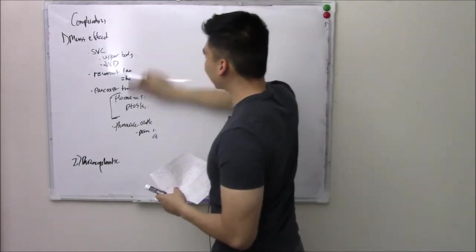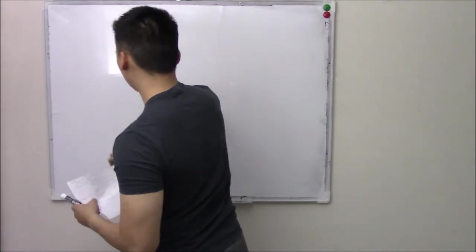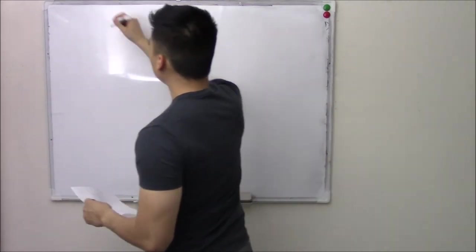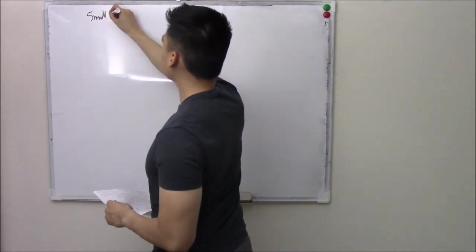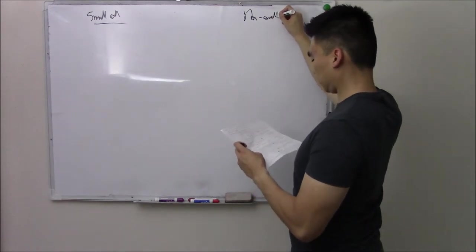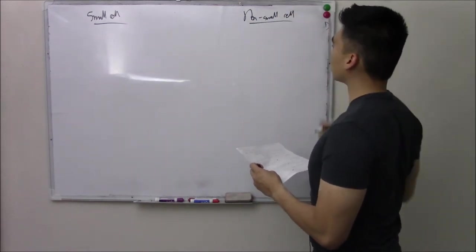Now let's talk about the specific types of lung cancer. So you can break lung cancer into two categories. Small cell lung cancer. And then there's non-small cell. We'll talk about non-small cell first.